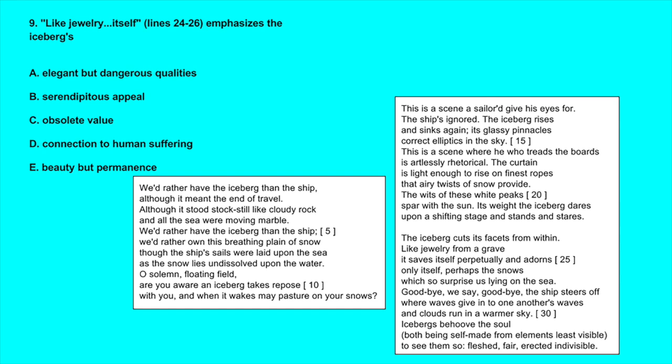Question number nine: Like jewelry through the word itself in lines 24 through 26 emphasizes the iceberg's what? So let's read these lines in context. The iceberg cuts its facets from within, like jewelry from a grave it saves itself perpetually and adorns only itself, perhaps the snows which so surprise us lying on the sea.